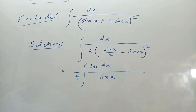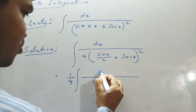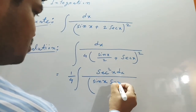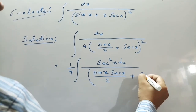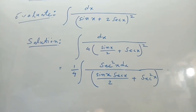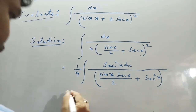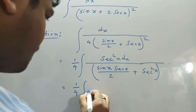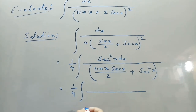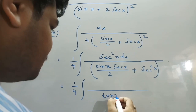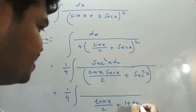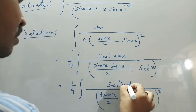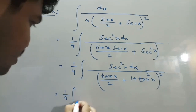Now multiply by sec²x on both sides — numerator and denominator — so sin x becomes sec x/2 plus sec²x in the bracket. Therefore, multiplying sec²x throughout: 1/4 times the integral of sec²x dx divided by (tan x/2 + 1)² plus tan²x, because sec²x equals 1 plus tan²x.